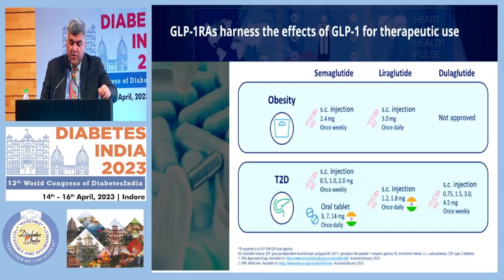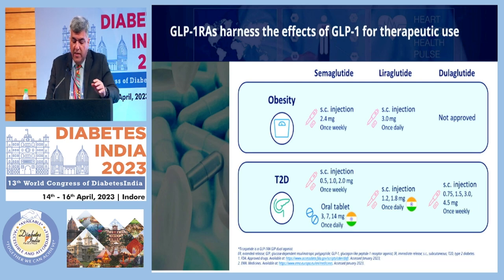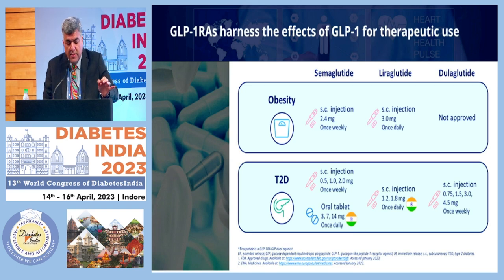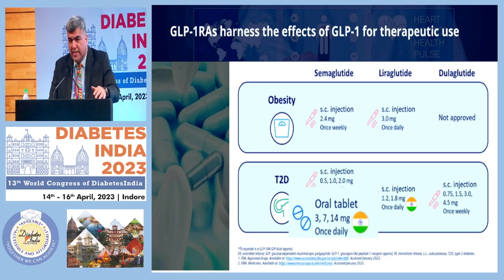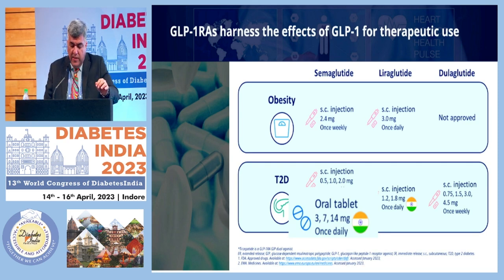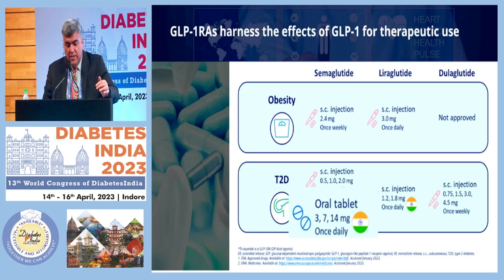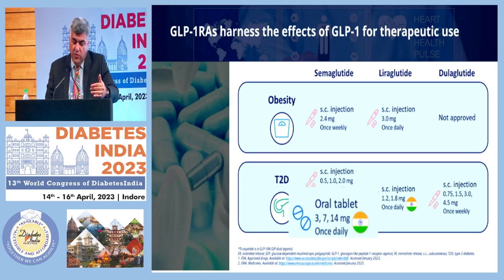GLP-1 RAs harness the therapeutic effects of GLP-1. Available agents include liraglutide, dulaglutide, and oral semaglutide. Globally, what's approved specifically for obesity is 2.4 mg injectable semaglutide (Ozempic/Wegovy) — hopefully available in India soon — and 3 mg liraglutide (Saxenda), not currently available in India. For type 2 diabetes management, all three drugs are approved. In India, we have oral semaglutide (Rybelsus) at 3, 7, and 14 mg, to be uptitrated gradually, as well as injectable liraglutide daily and dulaglutide.